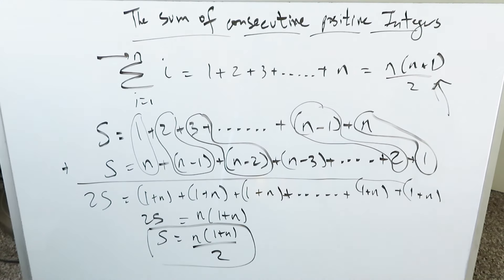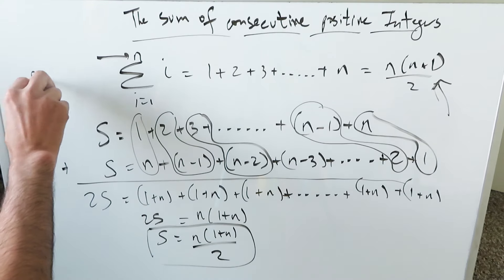A very excellent formula for determining the sum of positive consecutive integers up to a given value n. And I showed you an example at the beginning where n was equal to 10.